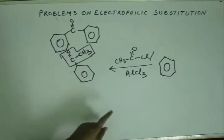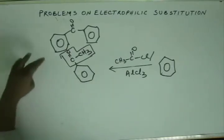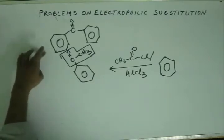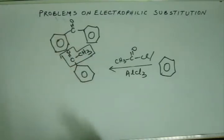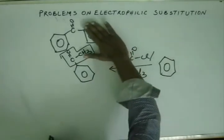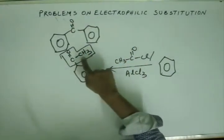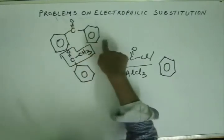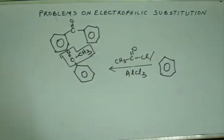Likewise, as a little extension of this, you can think about how Benzophenone can be generated. If you take Benzene and bring in a C=O–Ph group — that is, if you get a C=O–Ph acyl group — then straight away you can get Benzophenone from Benzene.